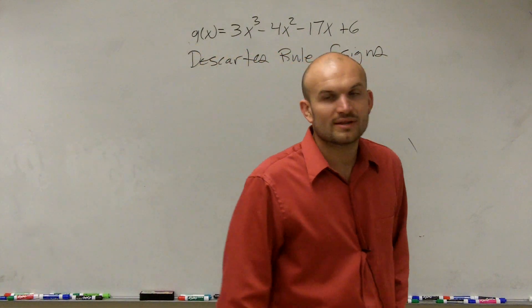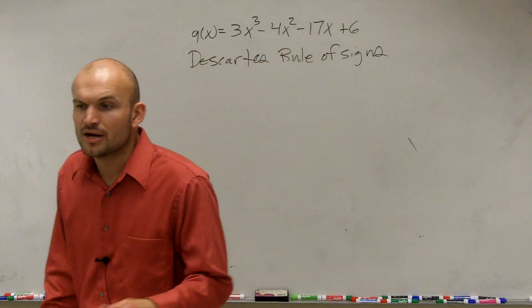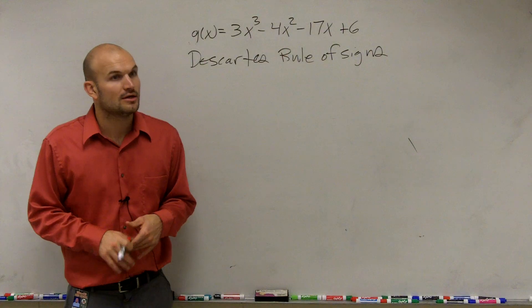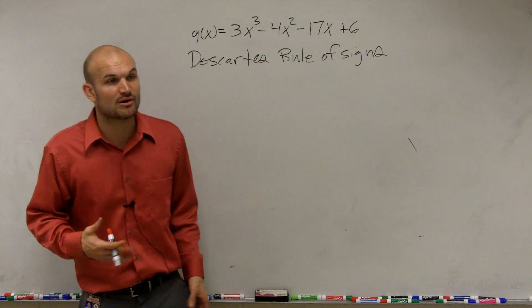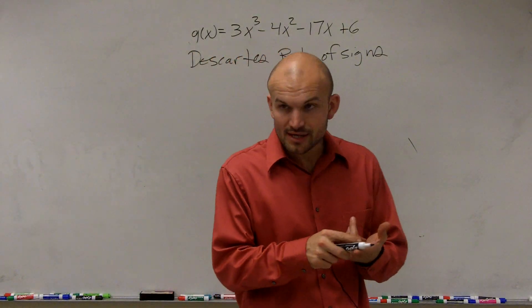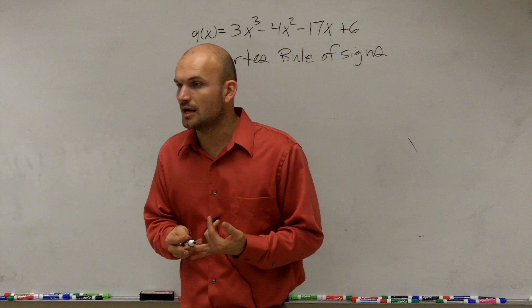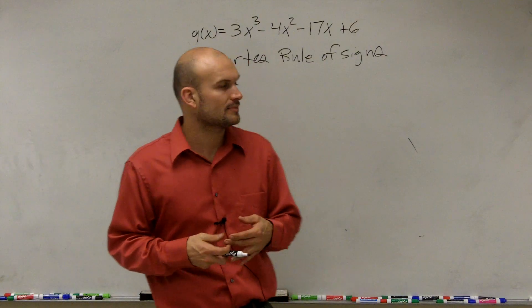So Descartes' rule of signs, what this tells us is the number of positive and the number of negative real zeros. So now, again, we're just going to be talking about real. But real can be irrational. And it can also be irrational and rational as well.